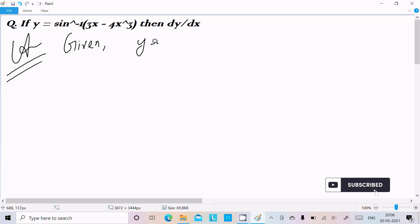The given is y = sin⁻¹(3x - 4x³). If I do the differentiation directly, sin inverse x differentiation is 1 by root under 1 minus x squared.